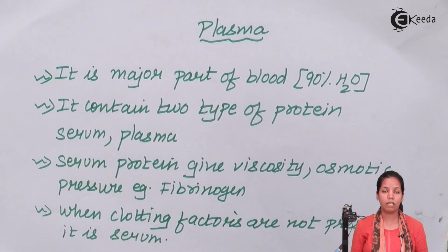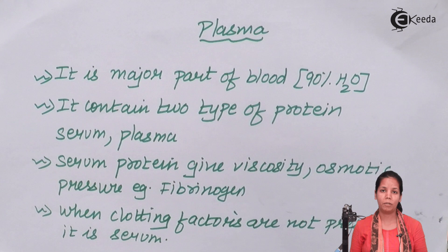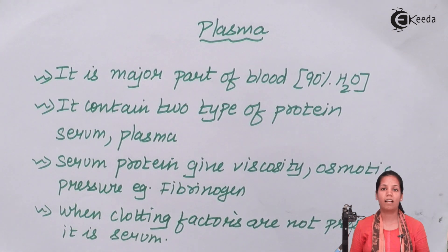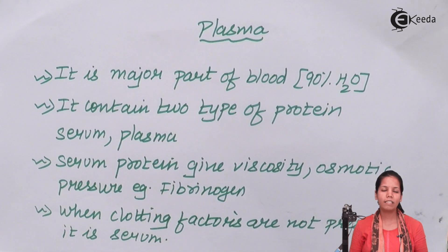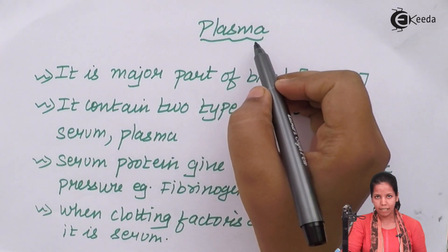Serum proteins are much talked about whereas plasma proteins are least talked about. Serum proteins give viscosity, maintain osmotic balance, and one example is fibrinogen. Fibrinogen is involved in the clotting mechanism — whenever you have a cut on your body, blood coagulates, and fibrinogen is one of the most crucial clotting factors.